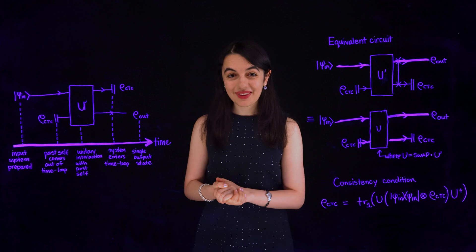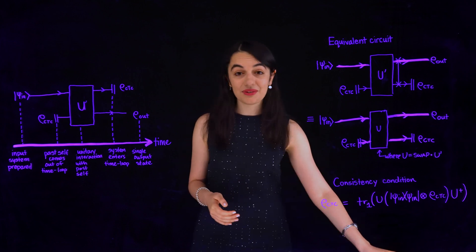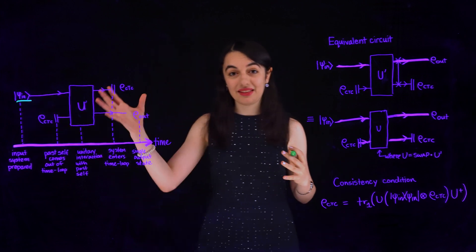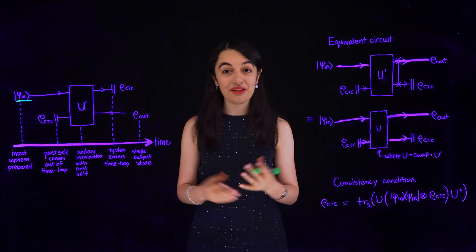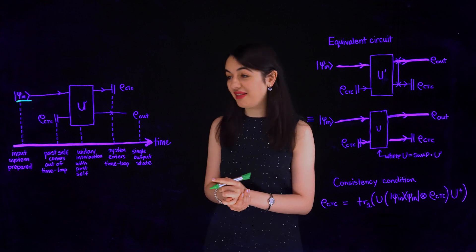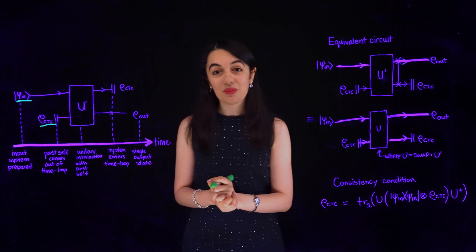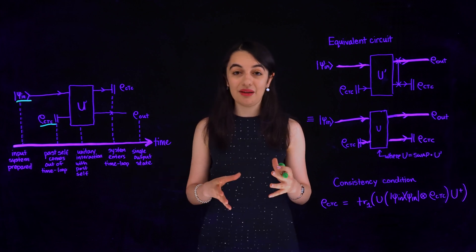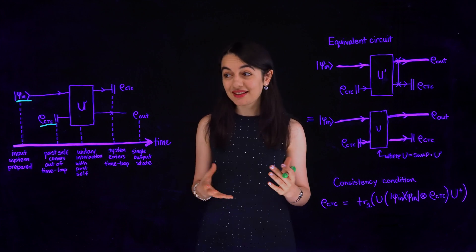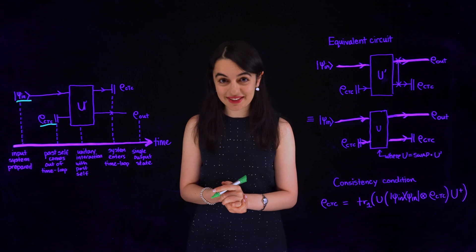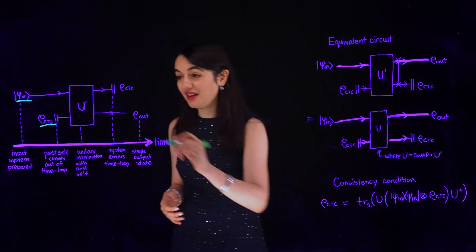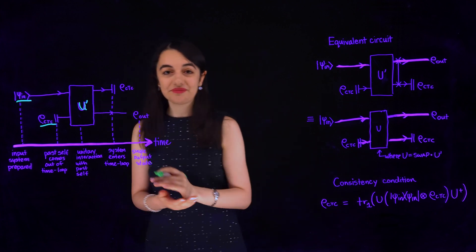Here is the overall circuit. Let's say that my original self that started the video was in the state ψ_in, represented by this state vector. Then, my future self came out of the time machine. I will describe its state by the density matrix ρ_ctc, where CTC stands for closed time-like curve, which is the technical term for time loops in physics. Next, my two selves interacted. Since they are quantum systems, they must interact via a unitary interaction, which I've labelled U'.